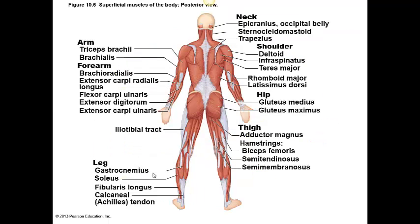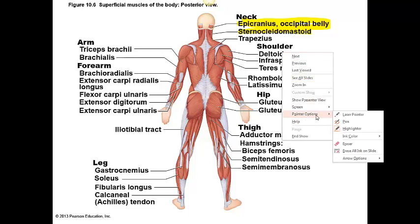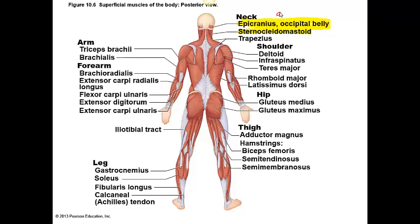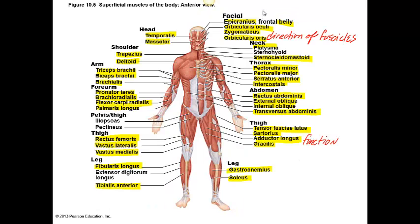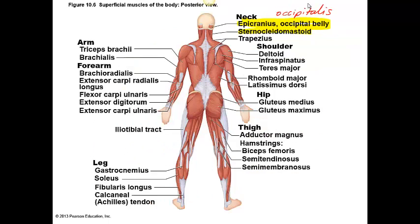On the posterior view we can see the epicranius again. The epicranius is the term for the occipitalis muscle combined with the frontalis muscle. The term occipitalis is essentially the same thing as referring to the occipital belly, and on the previous slide the frontal belly is essentially the same thing as using the term frontalis. It is important that you know that those two words mean essentially the same thing.